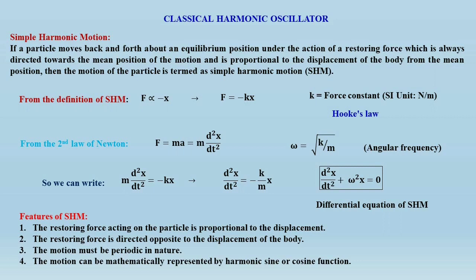If we apply Newton's second law, that is force equals mass times acceleration, then m d²x/dt² equals minus kx. Writing k/m as ω², we get the differential equation for simple harmonic motion: d²x/dt² plus ω²x equals 0. Here ω is called the angular frequency or natural frequency of vibration, given by the square root of k/m, where k is the force constant and m is the mass of the object.